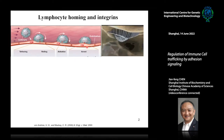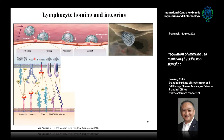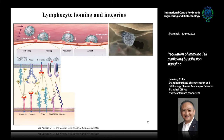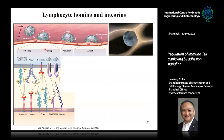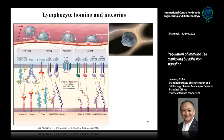The first step for the tethering and rolling is mainly mediated by molecules named selectins, including L-selectin expressed on the surface of lymphocytes, or E-selectin and P-selectin expressed on the surface of endothelial cells. In addition to selectins, some integrins like alpha-4 integrins, alpha-4b7 and alpha-4b1, can also mediate the rolling of lymphocytes. When the chemokine binds to the chemokine receptor on the surface of the lymphocytes, it will activate some intracellular signaling, which can further induce activation of integrins on the surface of the lymphocytes.